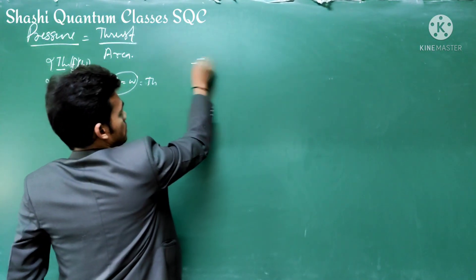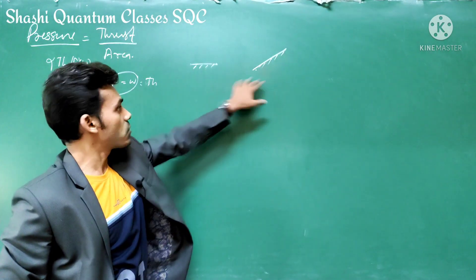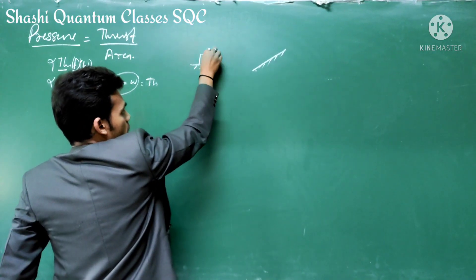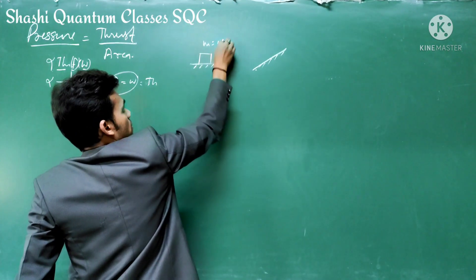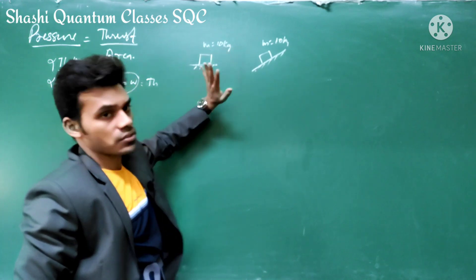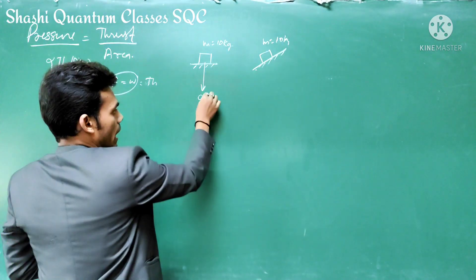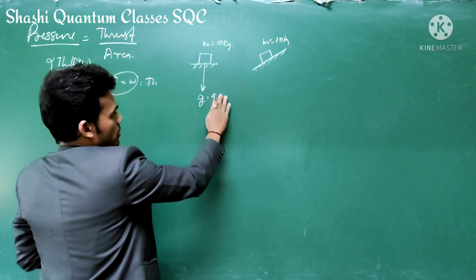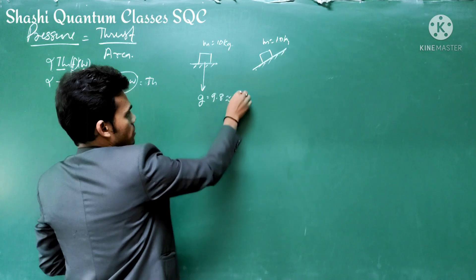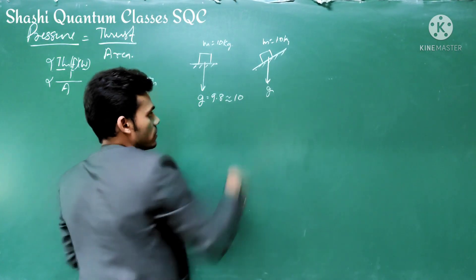We can take an example. Suppose this is one surface kept horizontal to the ground, and this is another surface which is inclined to the ground. If an object is kept on each surface with a mass of 10 kg, the acceleration due to gravity is acting downward, with value 9.8 m/s², which we approximate to 10 m/s².